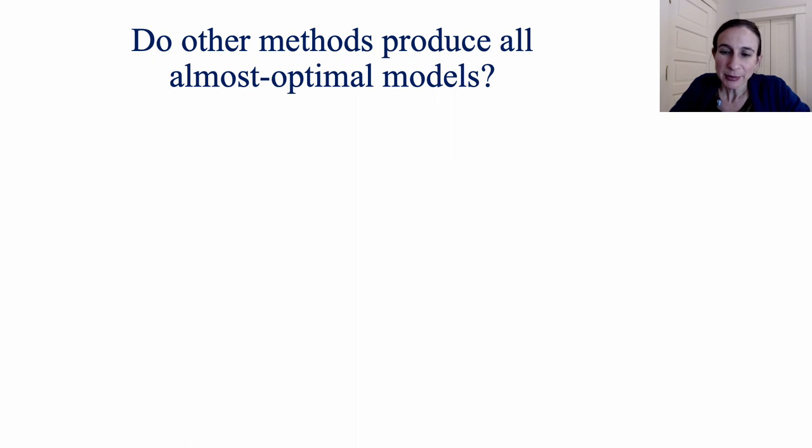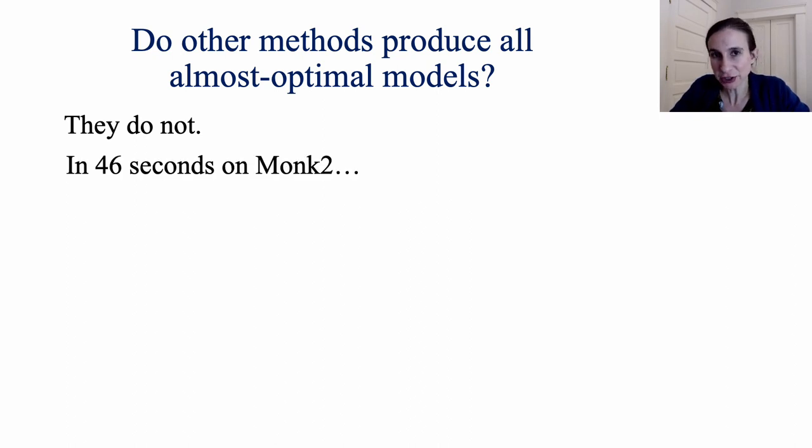Now we might be wondering if we need something like TreeFARMS. Can we get the Rashomon set by just sampling lots of trees? And so we asked, do other methods produce all almost optimal models? And as it turns out, they do not. So just to show you an example on the Monk2 data set, TreeFARMS finished creating the Rashomon set in 46 seconds.